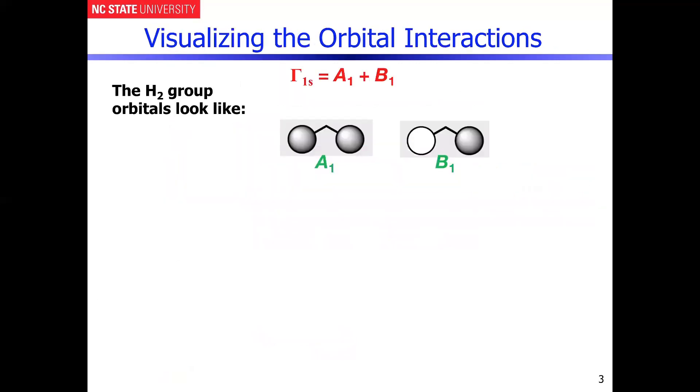So now if you visualize these group orbitals. So if we take the basis as effectively the 1s orbitals on the hydrogen you can clearly see that if I make them phased in this particular manner to say that that's positive phasing then negative phasing would be obviously when they're unfilled. And that's just what I'm showing here is that the totally symmetric combination has A1 symmetry.